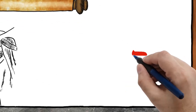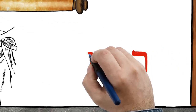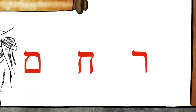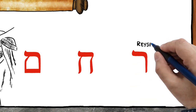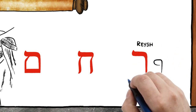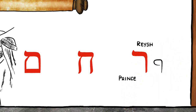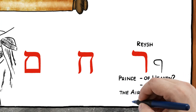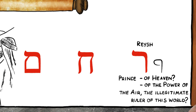The Hebrew word compassion is composed of three letters: Resh, Chet, and Mem. Let's discover what this word means in the picture language of the Hebrew. Resh is pictured here as a prince. The question is, what prince? Are we talking about the prince of heaven, or the prince of the power of the air, the illegitimate ruler of this world?